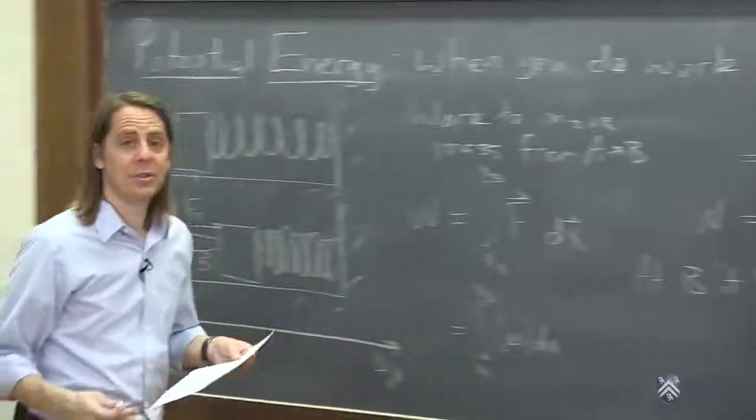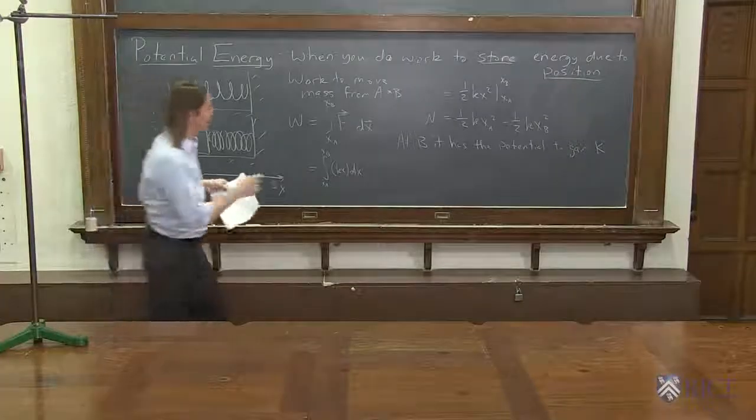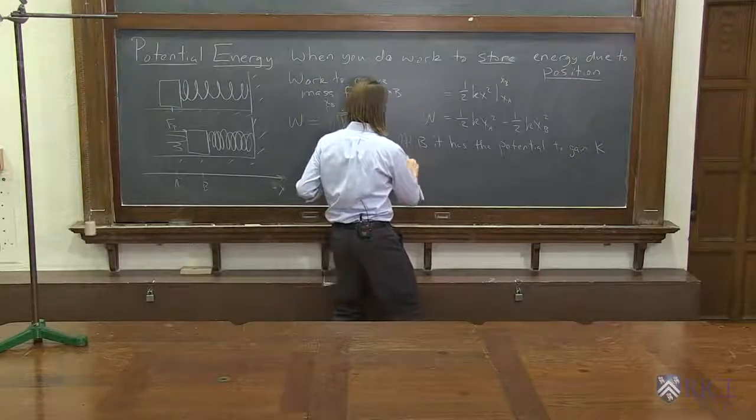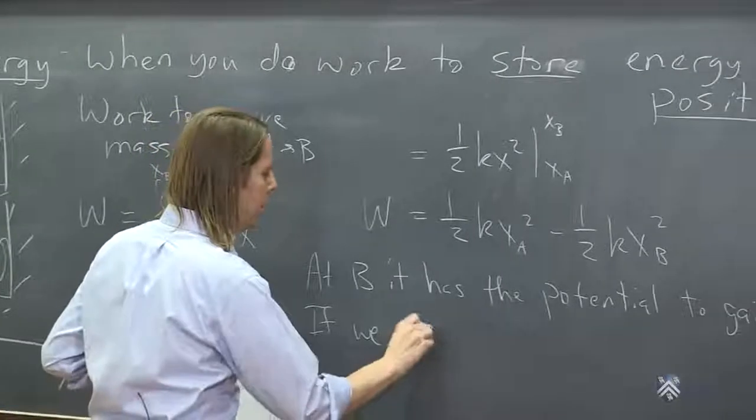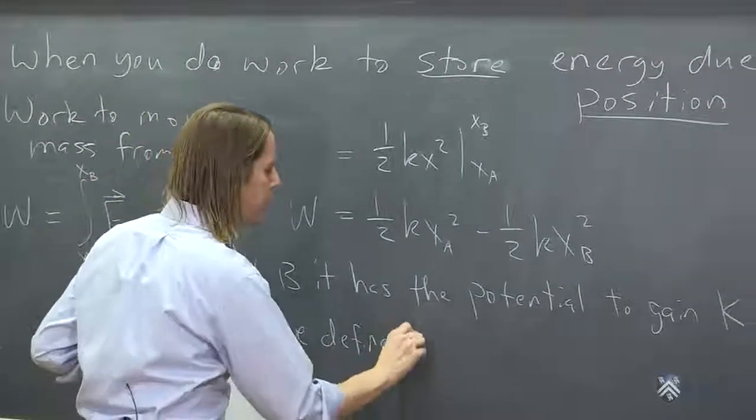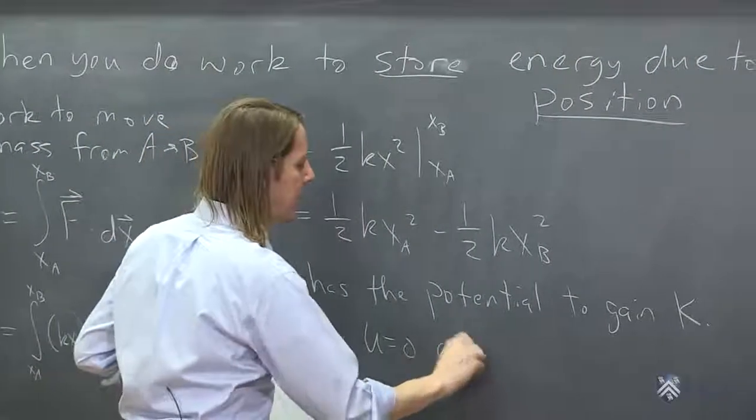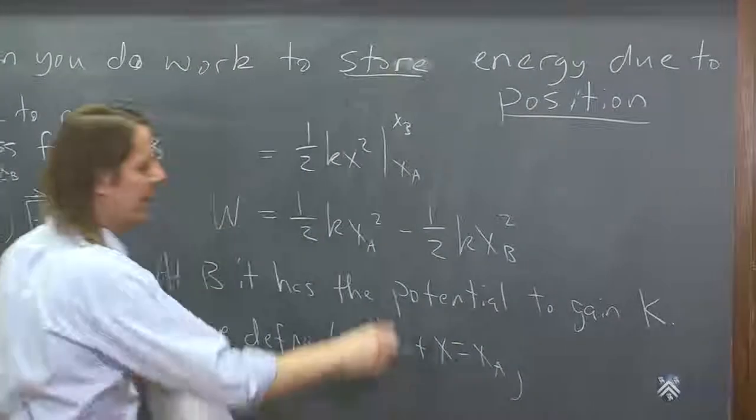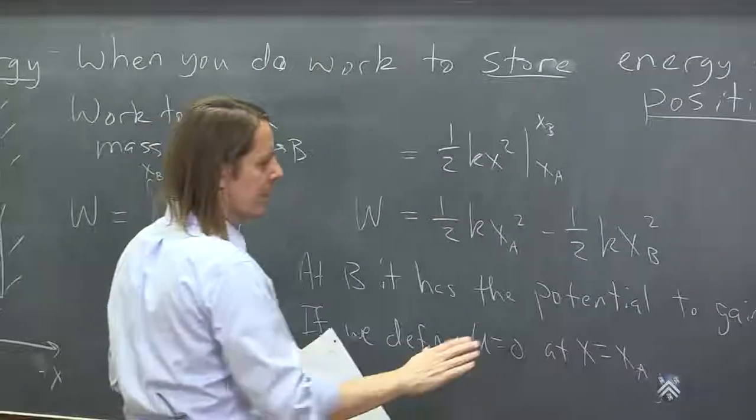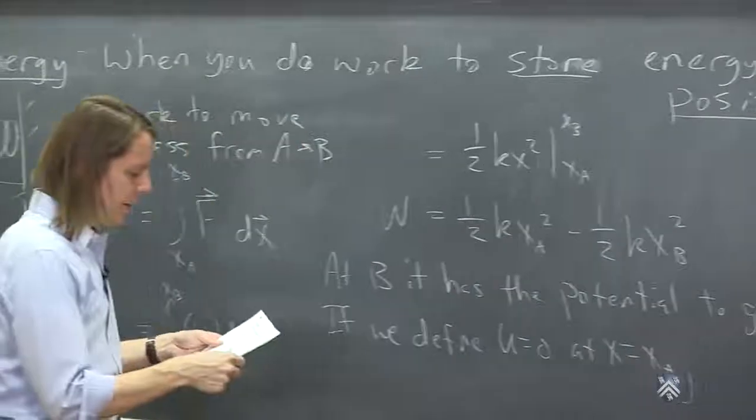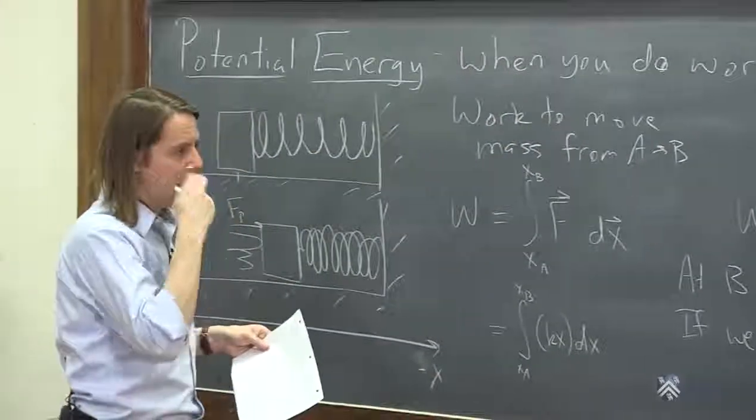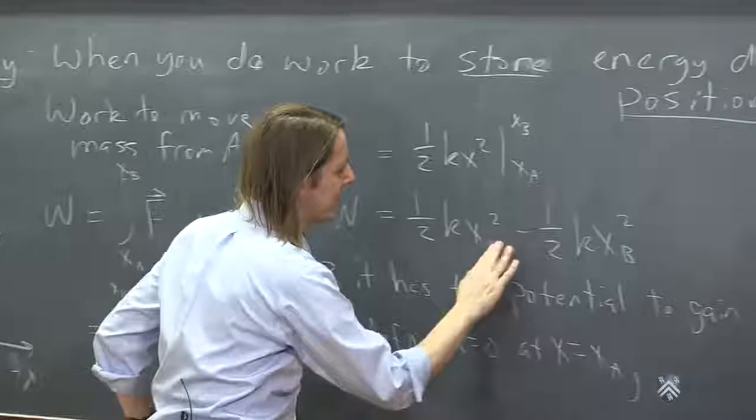How much could it gain? Well, if we define u equals 0 at x equals x_A, then that makes this part 0. Therefore, I'm sorry, let's see, yeah, this wasn't coming out right, x_B minus x_A, there we go.